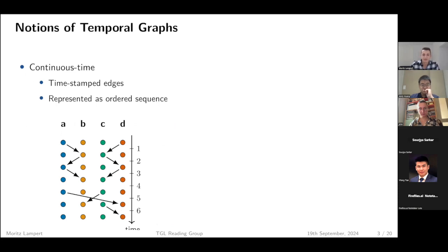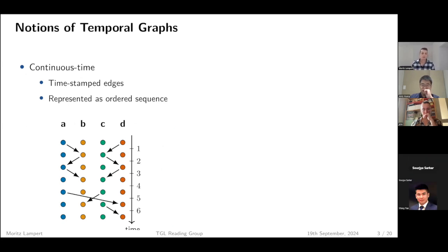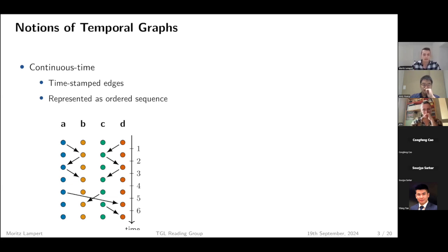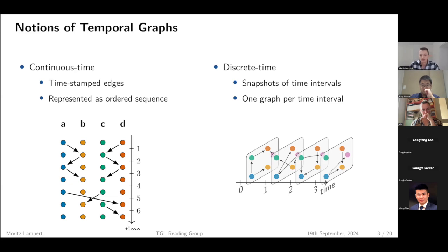There are different notions of temporal graphs. This talk focuses on two. One is the continuous time notion, where we have timestamped edges in an ordered sequence — visualized as a time-unfolded graph with nodes duplicated for different timestamps and links happening between nodes at different timestamps. Another notion is discrete temporal graphs, where we have snapshots of the temporal graph, with a normal graph at each time interval.